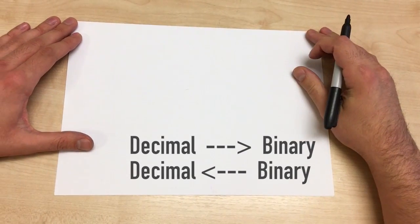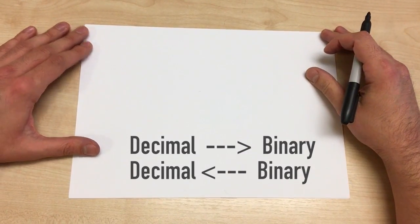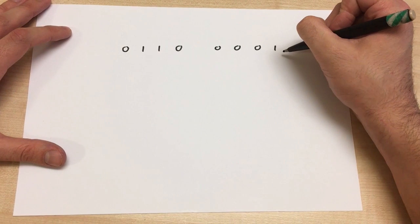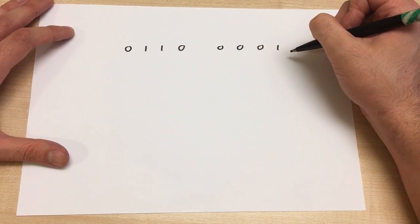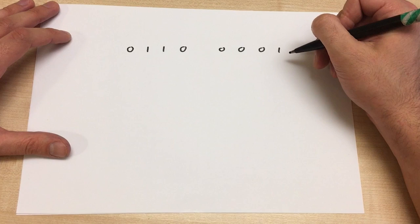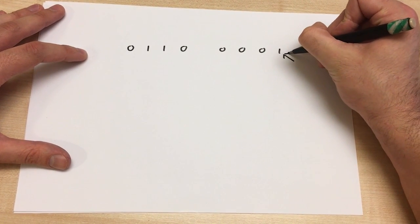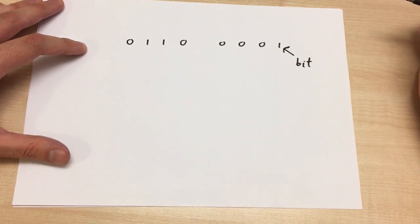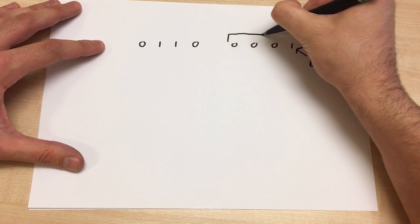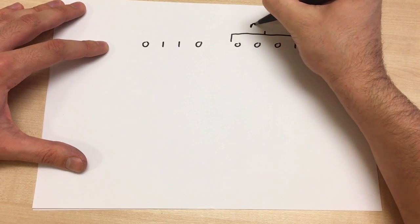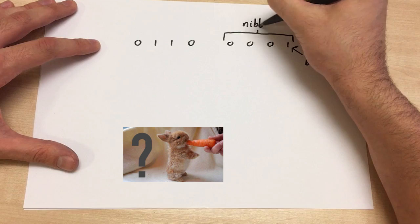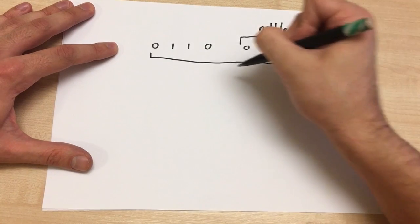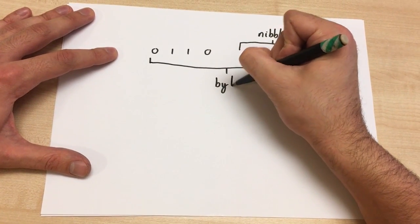Today we're going to do binary to decimal and decimal to binary conversions. Binary can either be zeros or ones because computers only understand zeros or ones — they don't understand decimal numbers like we do. A single zero or one is referred to as a bit. Four zeros or ones is referred to as a nibble. And eight zeros or ones is referred to as a byte.